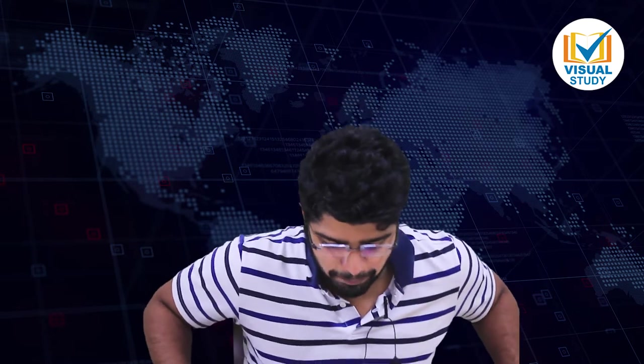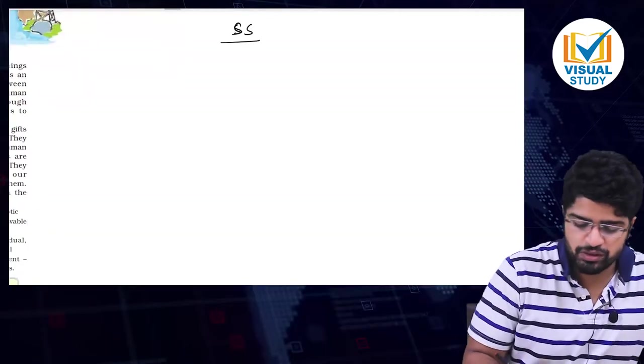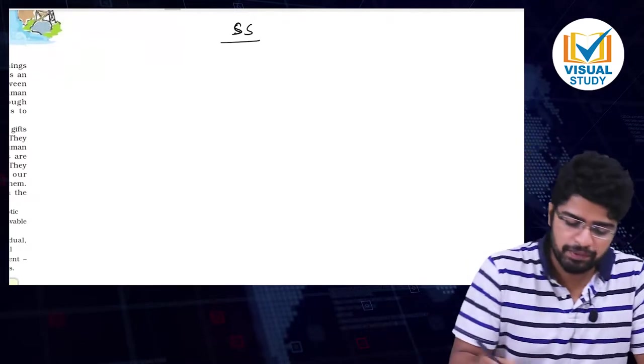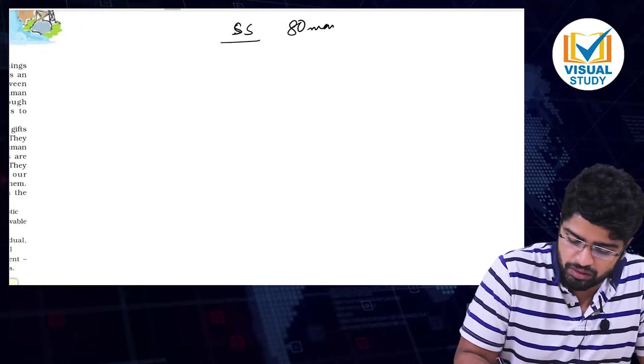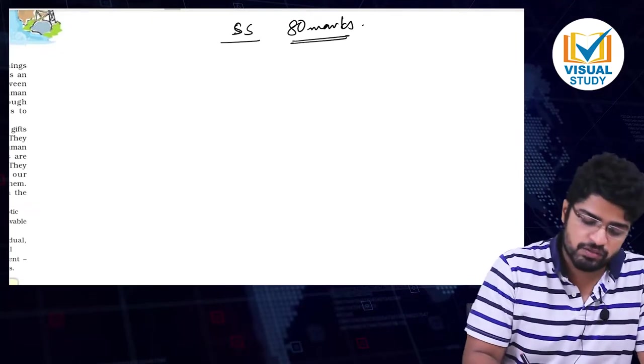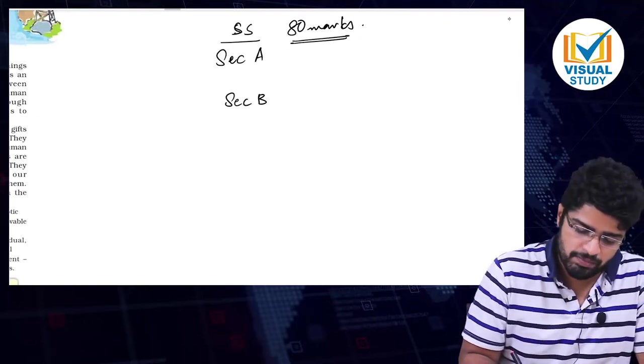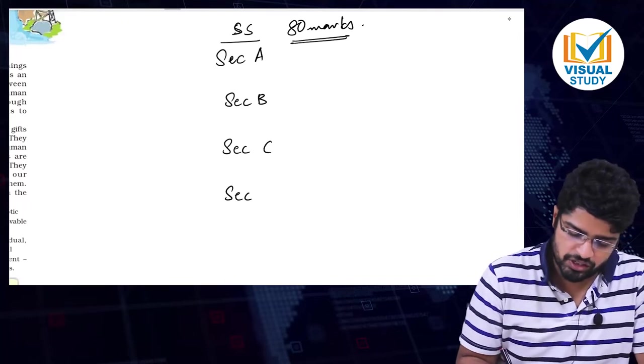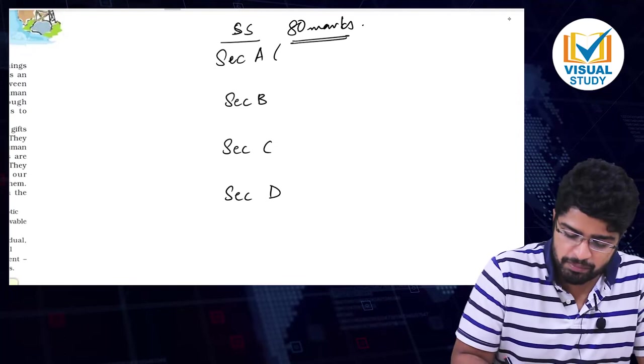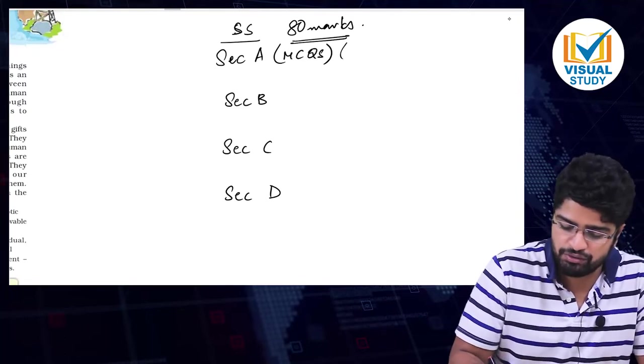Okay, Resources and Development. Students, this is the first topic of geography. As I have been noting right from the beginning, our subject of social studies will be one single paper — total 80 marks. It is divided into 4 sections: Section A, Section B, Section C, and Section D. Section A comprises all MCQs, one mark each.